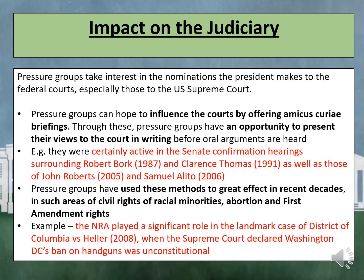Pressure groups take interest in the nominations that the president makes to the federal courts, especially those to the US Supreme Court. Pressure groups can hope to influence the courts by offering amicus curiae briefings, through which they have an opportunity to present their views to the court in writing before oral arguments are heard. For example, they were certainly active in the Senate confirmation hearings surrounding Robert Bork in 1987 and Clarence Thomas in 1991, as well as John Roberts in 2005 and Samuel Alito in 2006. Pressure groups have used these methods in areas such as civil rights of minorities, abortion, and First Amendment rights. An example is the NRA, who played a significant role in the landmark case of District of Columbia versus Heller in 2008, when the Supreme Court declared Washington DC's ban on handguns unconstitutional.